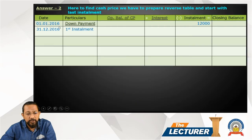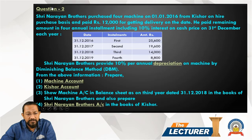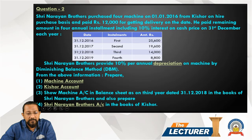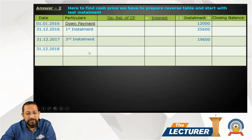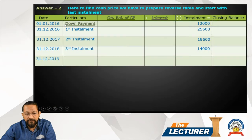First installment: 25,600. Second installment: 19,600. Third installment: 14,000. Fourth installment: 8,800. These are the four annual installment amounts we will work with in our reverse calculation to find the cash price.